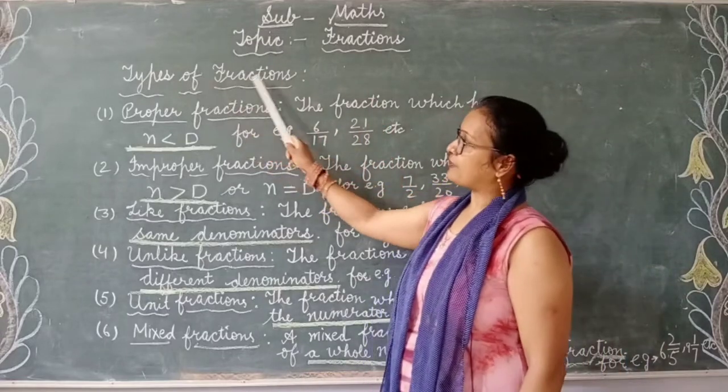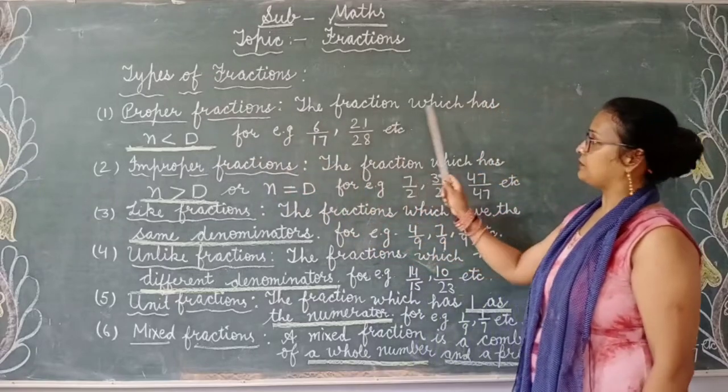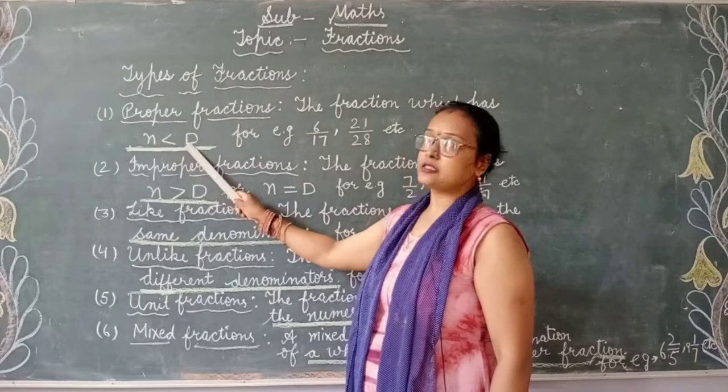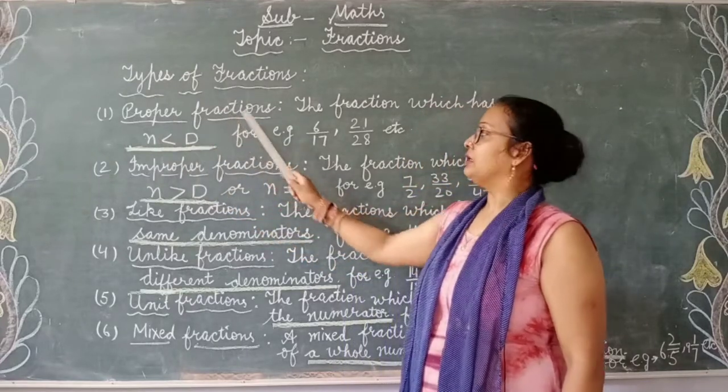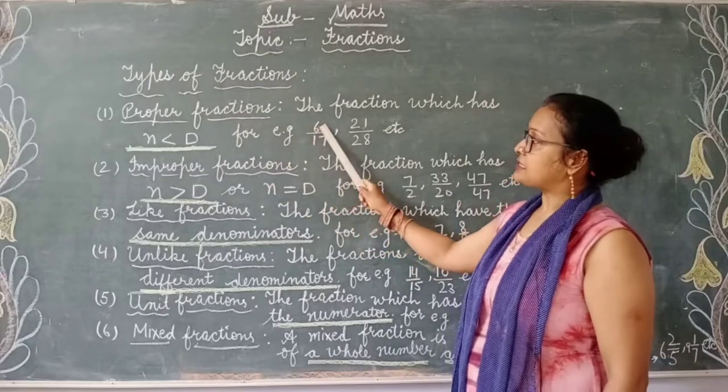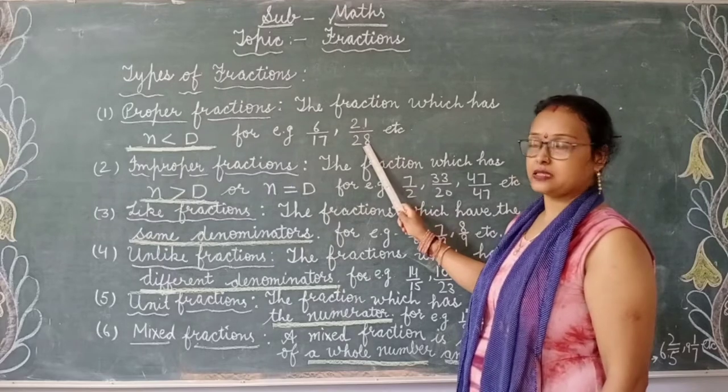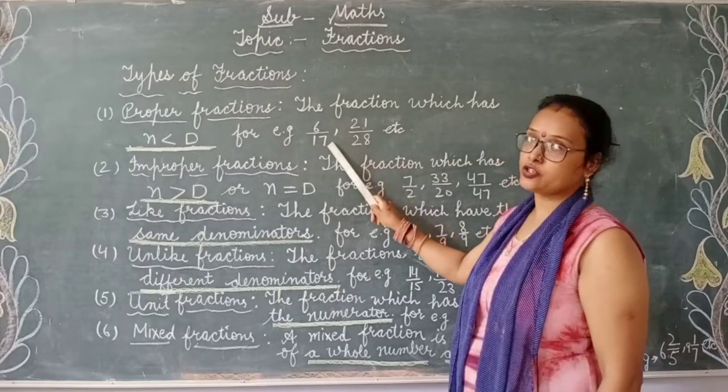First is proper fractions. The fraction which has numerator smaller than denominator is called proper fraction. For example, 6 by 17, 21 by 28. Here numerator is smaller than denominator.